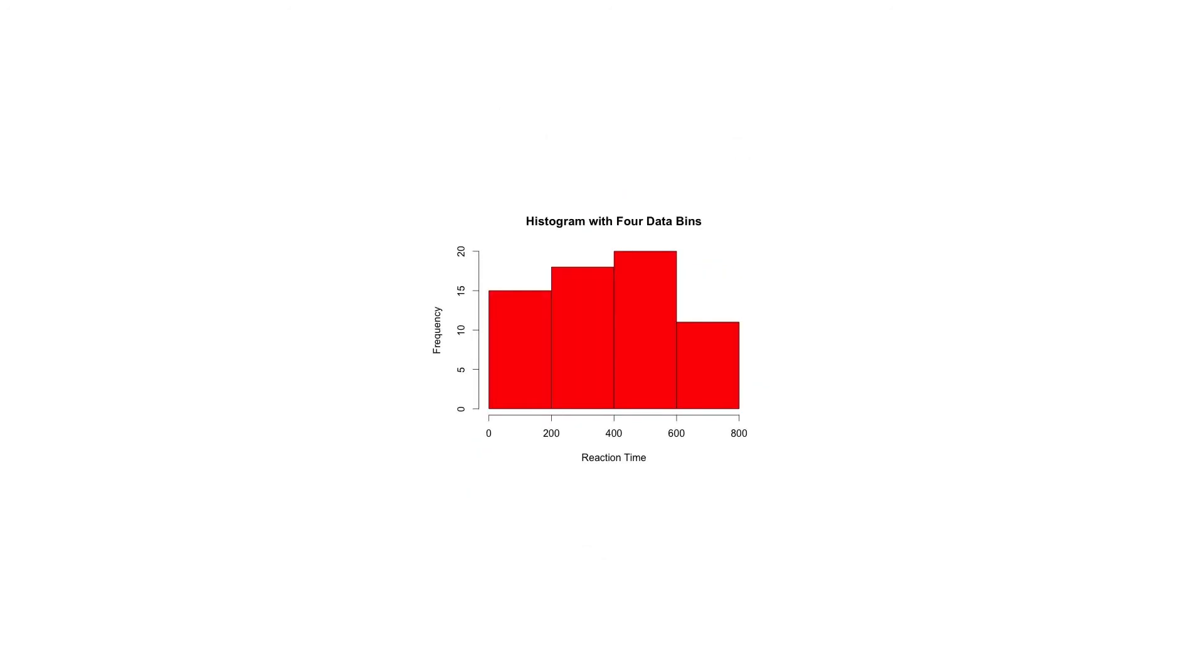A histogram comprising of only 4 bins wouldn't produce a distinguishable enough shape of distribution as a 20-bin histogram would. However, with density plots, this isn't an issue.